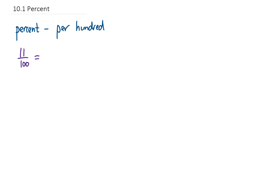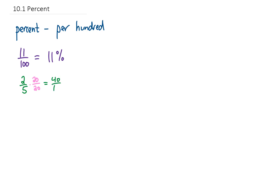So the fraction 11 out of 100 means 11%. If you have a fraction like 2 out of 5 and you wanted to know what percent this was, one way to do it would be to ask: well, if we have 2 out of 5, what is that out of 100? To make the denominator 100, you would multiply the 5 by 20. Whatever you do to the denominator, you have to do the same thing to the numerator. So if we multiply 2 by 20, we get 40, and 5 by 20 gives us 100. We've determined that the fraction 2 out of 5 is the same thing as 40%.